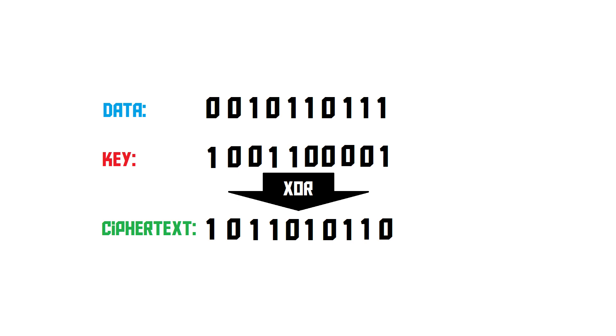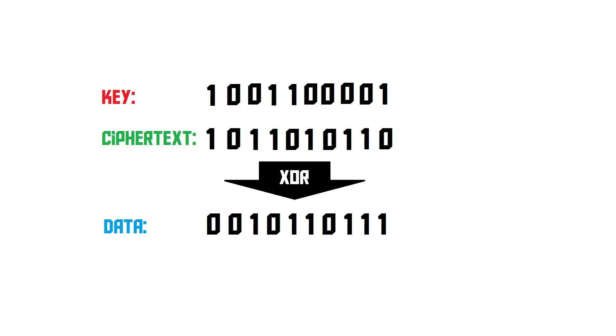This is how the one-time pad works. The decryption is very simple — it's just the same thing but the other way around. It works by XORing the cipher text with the key, and then we get the original message back. The one-time pad is actually an unbreakable form of encryption. It's mathematically proven that it's unbreakable because the key has exactly the same length as our message. Imagine this: if you have a text document that is 5 kilobytes in size and is encrypted with a 5 kilobyte key...